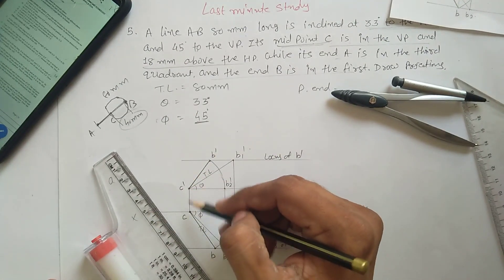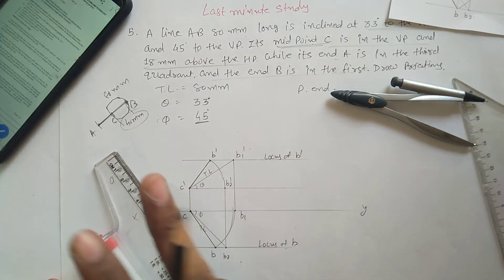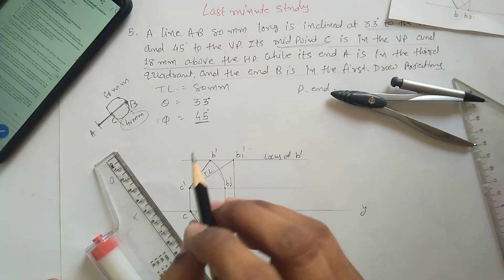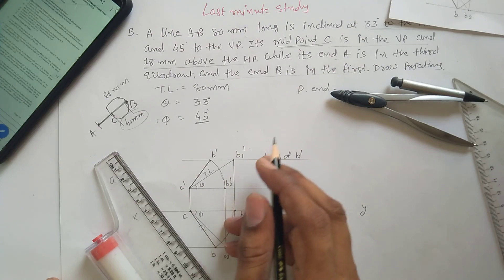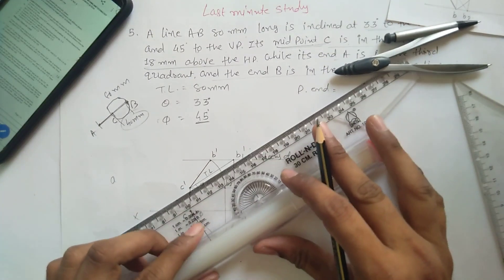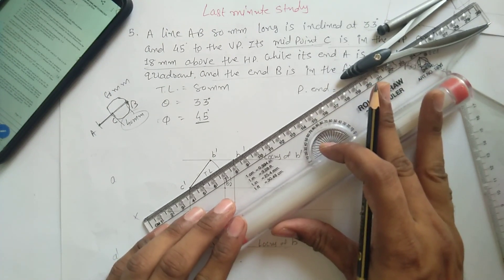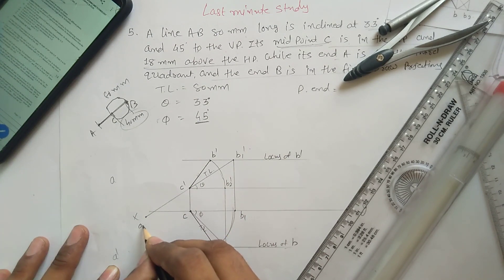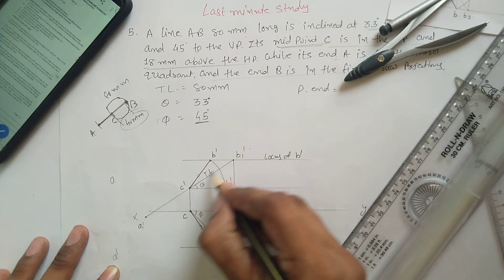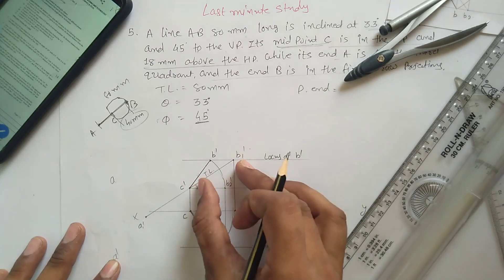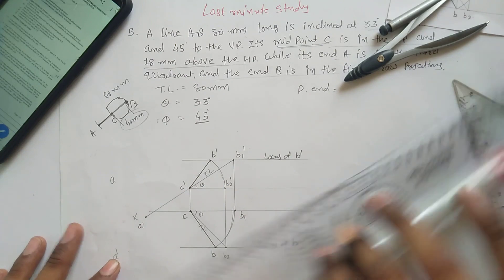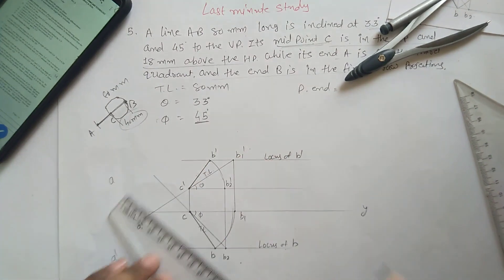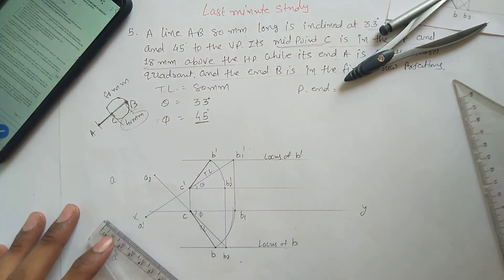We are considering only the CB line, not the full AB line yet. This gives the elevation length and plan length for CB. But C is only the midpoint — we need point A. To find A, extend the C dash B1 dash line further: since the full true length is 80 mm and CB is 40 mm, this extension is also 40 mm. This point is A1 dash — not the final point. Extend the other line in the same direction: this point is A2.